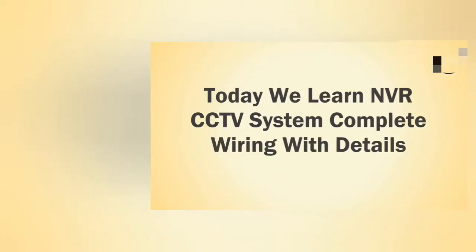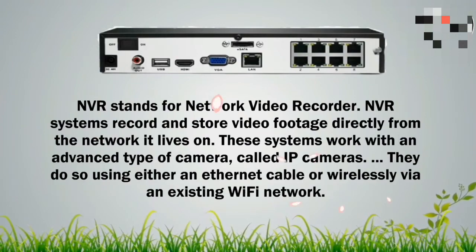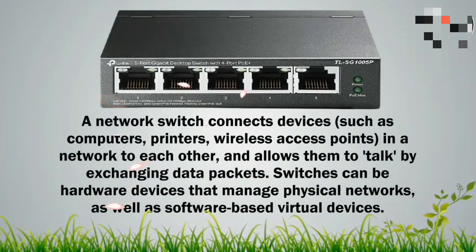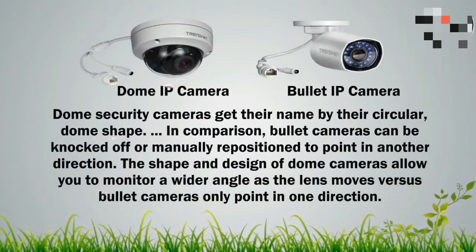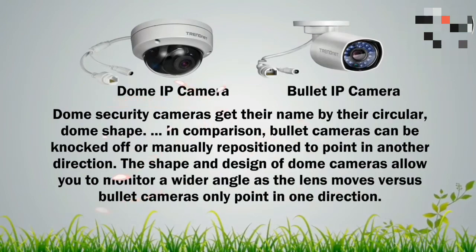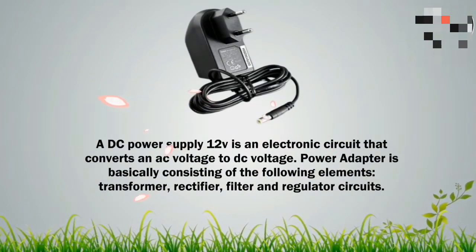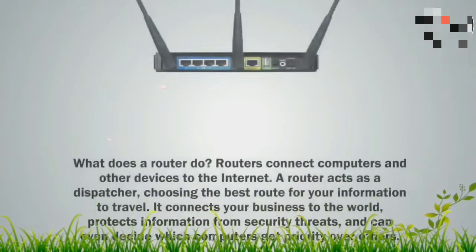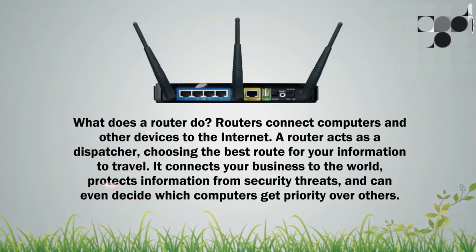So before then we're going to look at a few important terminologies, one of which is the NVR. The NVR stands for Network Video Recorder — it is what stores and records the video feeds from a network line. Then of course the second is a network switch that will give internet connections between devices. Then of course the IP cameras. These cameras are different from the analog cameras we used to have; these ones have an internet slot. Then the adapter, which will be used to power on the NVR and the DVR. Then we have a router, which creates the internet connection for you.